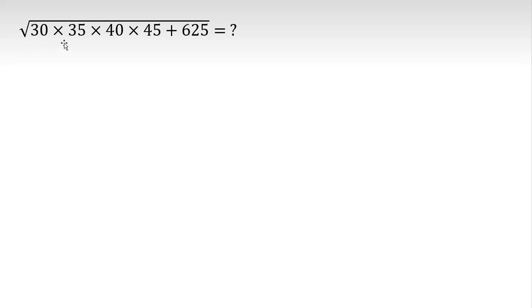We want to find the square root of 30 times 35 times 40 times 45 plus 625. Okay, let's pay attention to the numbers and what property they have.